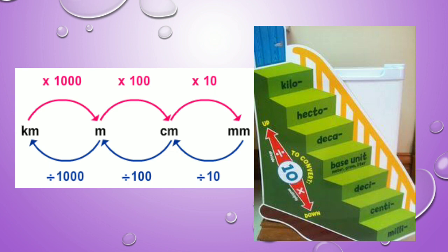If we change the meter, what do we do? 1 meter equals 100 centimeter. We need to change the meter. It's easy to see how easy it is. It will be useful for all class students and also for aptitude examinations. Okay, we start.